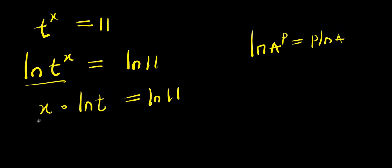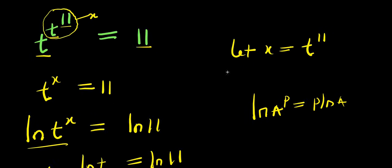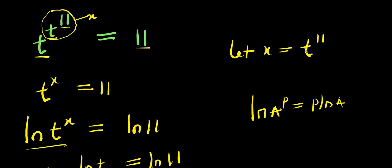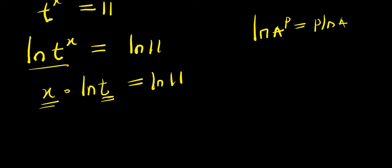Now there's an x variable here and a t variable here. What I'm going to do will be to ensure that the two variables are the same. To achieve that, I go back to this equation: x equals t power 11.